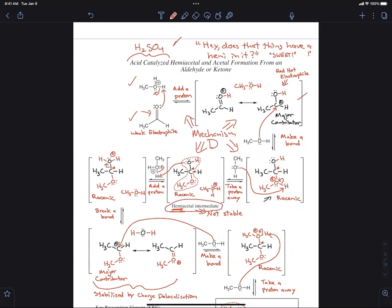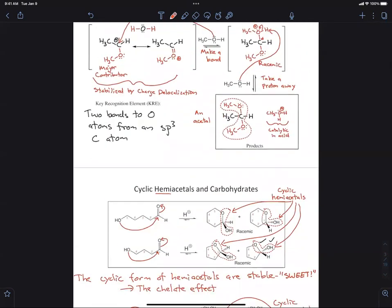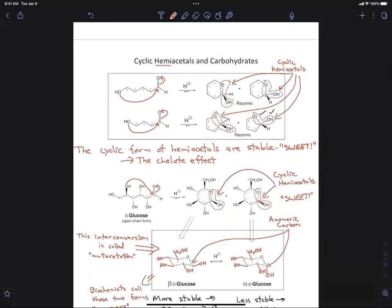In a linear form, this is not stable. But of course, we know that when it's cyclic, it is stable. And that's what's related to carbohydrates. So when we look at that, we talked about this before. We talked about how in a cyclic form, the cyclic hemiacetal, the one shown here, are actually stable.